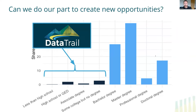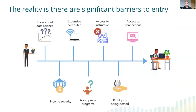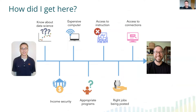We designed DataTrail to target folks with limited educational background and limited knowledge of data science, to train them as entry-level data managers, data analysts, and data entry workers, and connect them to Johns Hopkins. The reality is there are significant barriers to entry: you have to know what data science is, have access to an expensive computer, income security, appropriate programs and instruction, the right jobs, and connections. We wanted to systematically address and knock down those barriers.